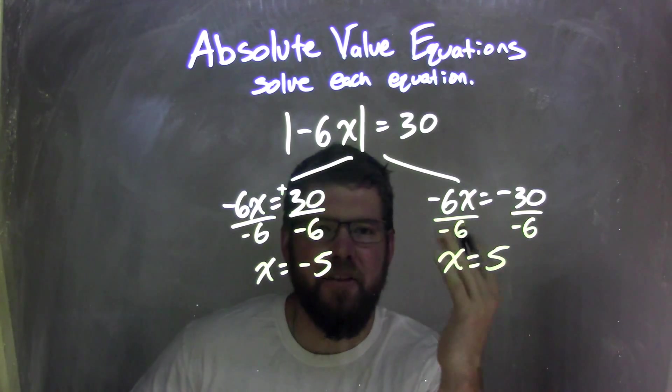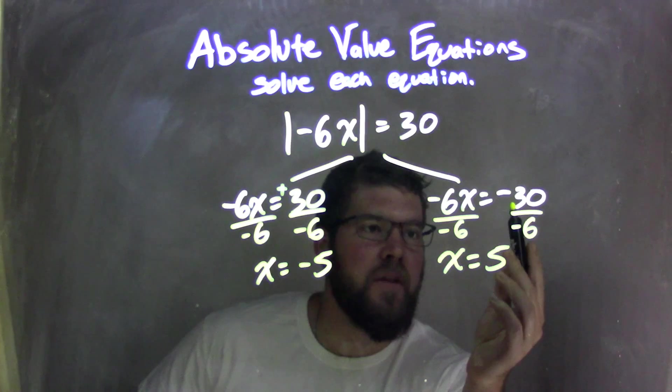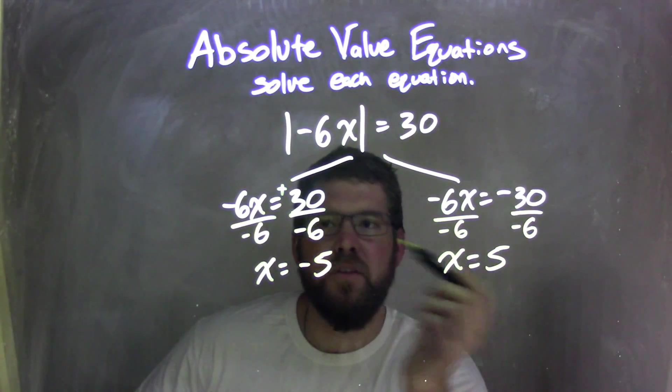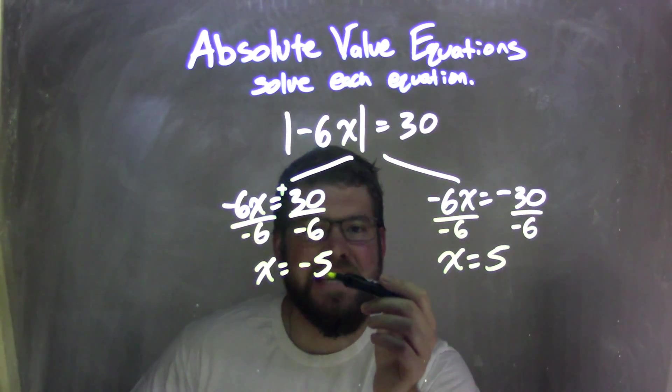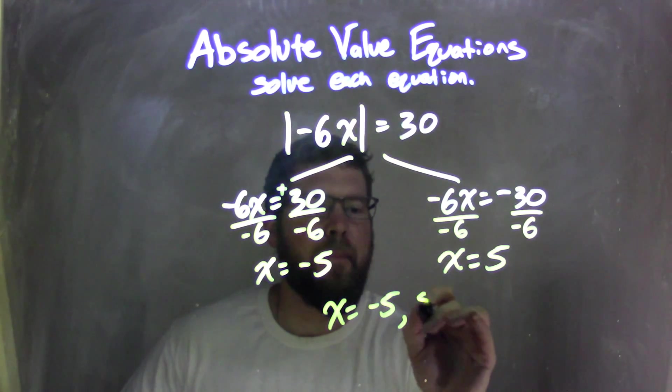and they don't understand why they didn't get their answer fully correct as they mess up on their negatives here. So this one, negative divided by negative is positive. Positive divided by negative is negative. So my final answer is x equals negative 5 and positive 5.